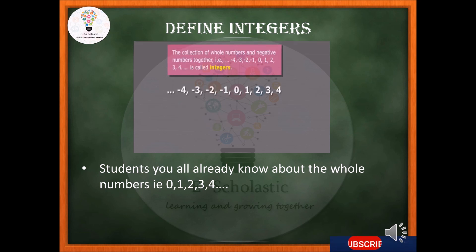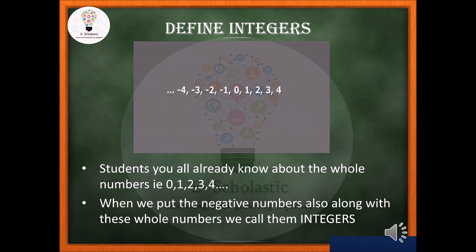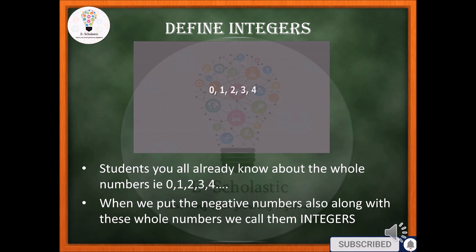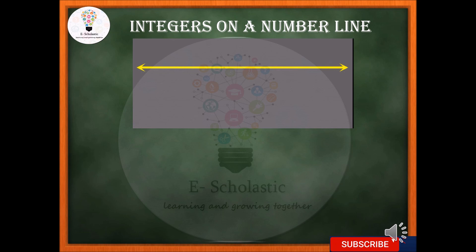Let's understand what integers are and how we define them. You already know that the whole numbers are 0, 1, 2, 3, 4, and so on. When we put the negative numbers along with these whole numbers — that is, minus 1, minus 2, minus 3, minus 4, and so on — we call them integers. So integers are the collection of whole numbers and negative numbers together.